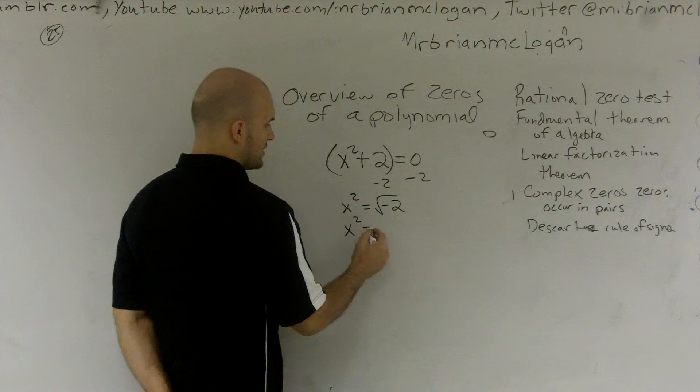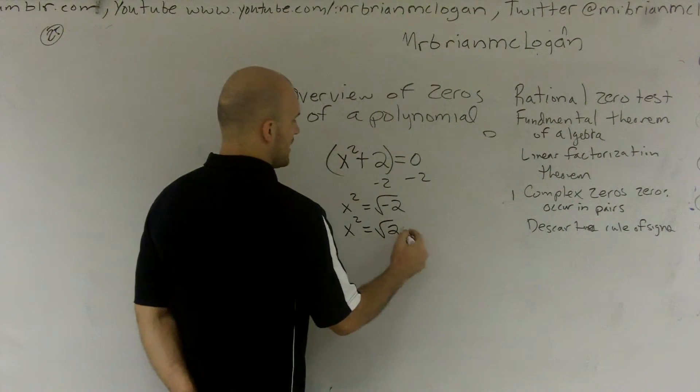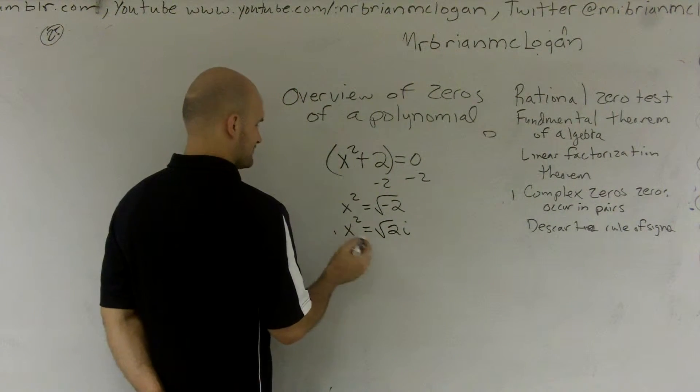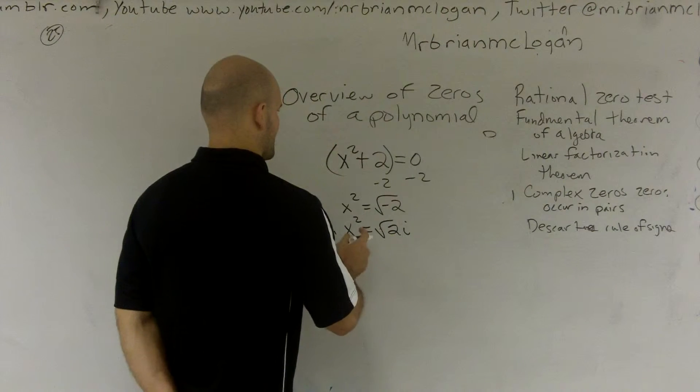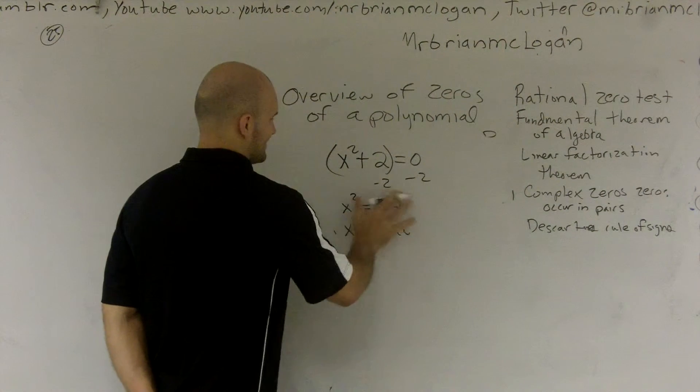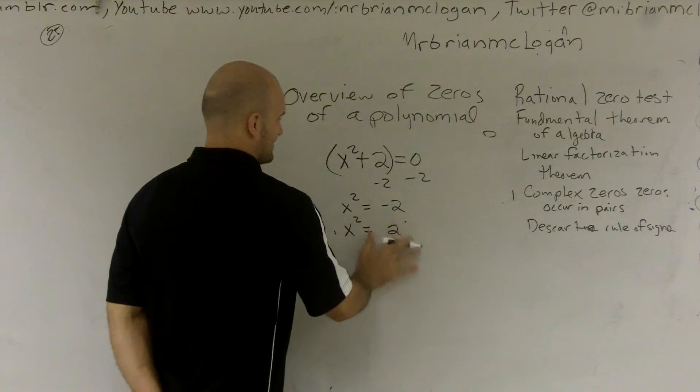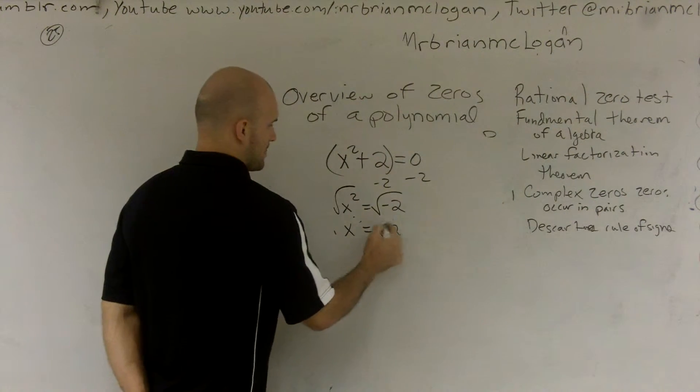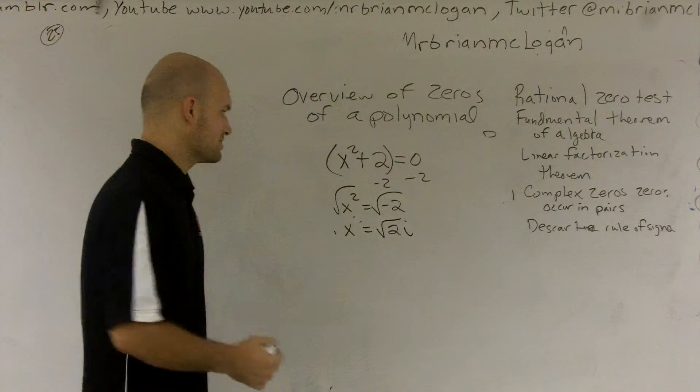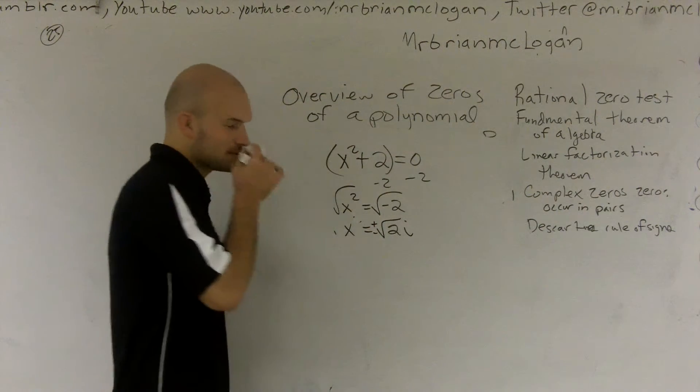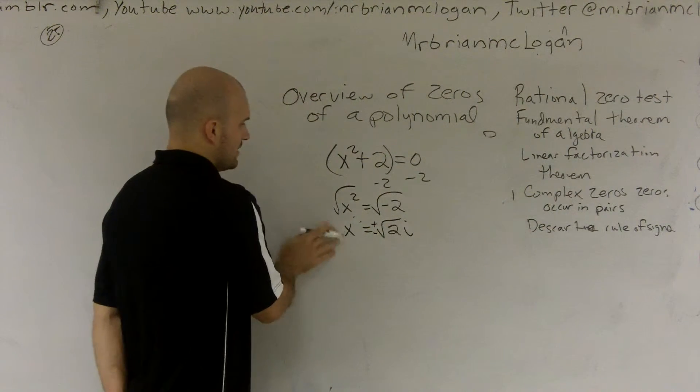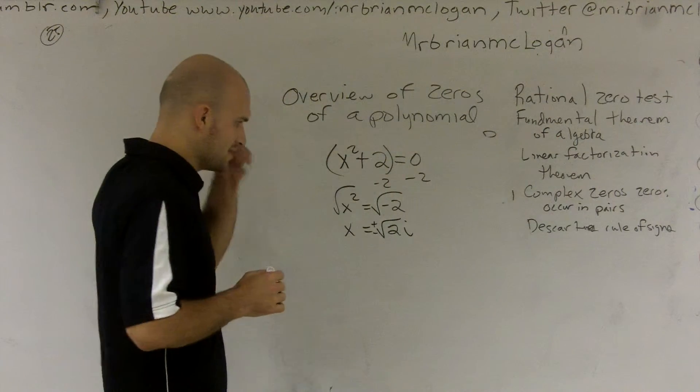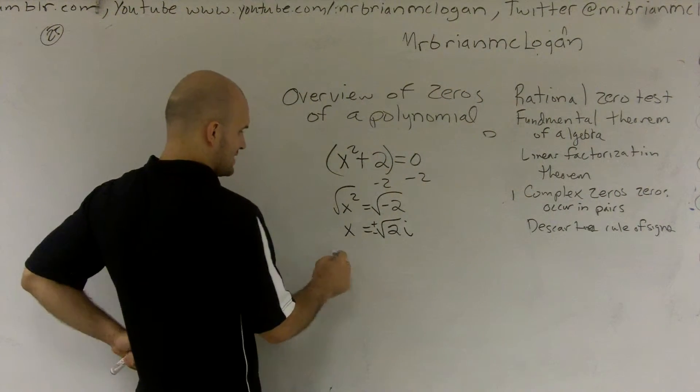Subtract by 2, I get x² = √(-2). I can pull out my i. x² = √(2i). You take the square root, that cancels out. So it's x = ±√(2i).